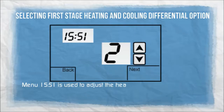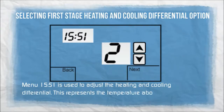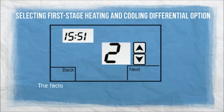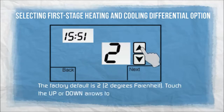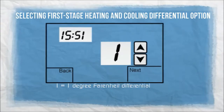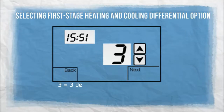Menu 15S1 is used to adjust the heating and cooling differential. This represents the temperature above the cooling set point or below the heating set point when the equipment is energized. The factory default is two degrees Fahrenheit. Touch the up or down arrows to change the differential. 1: one degree Fahrenheit differential. 3: three degree Fahrenheit differential.